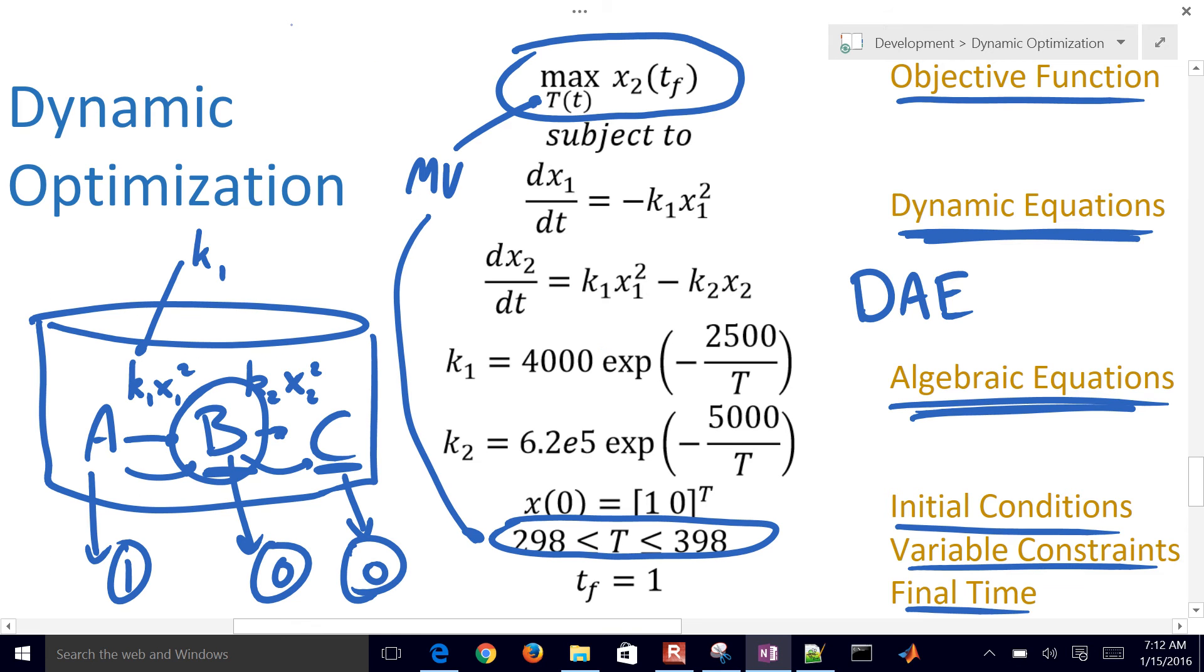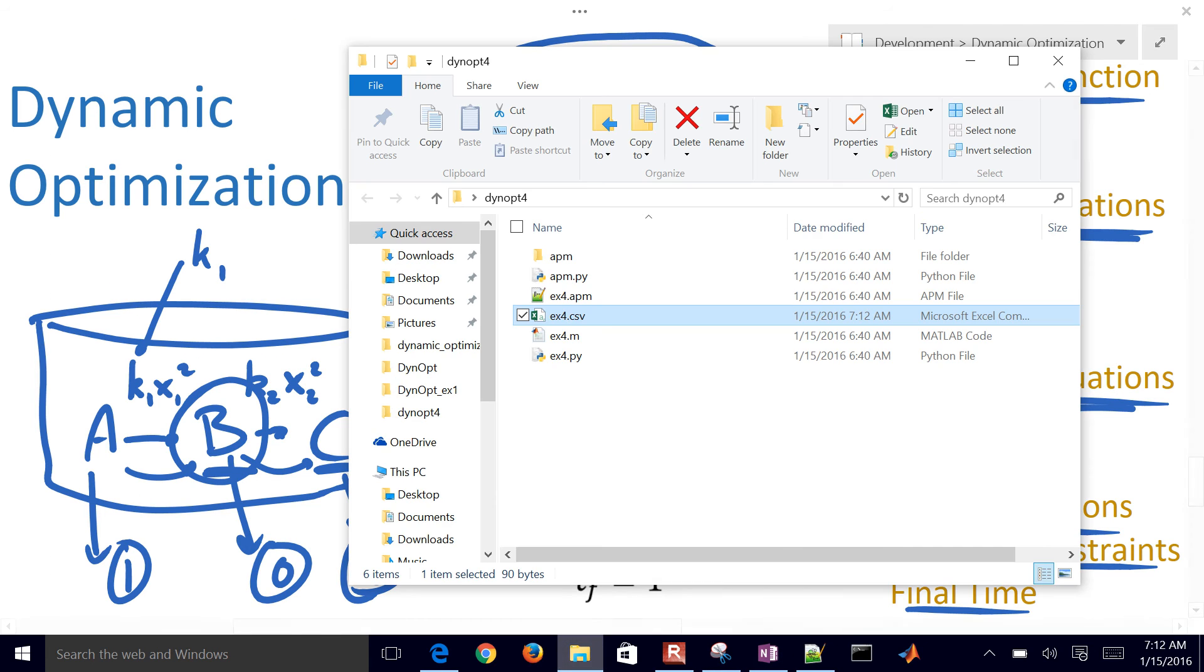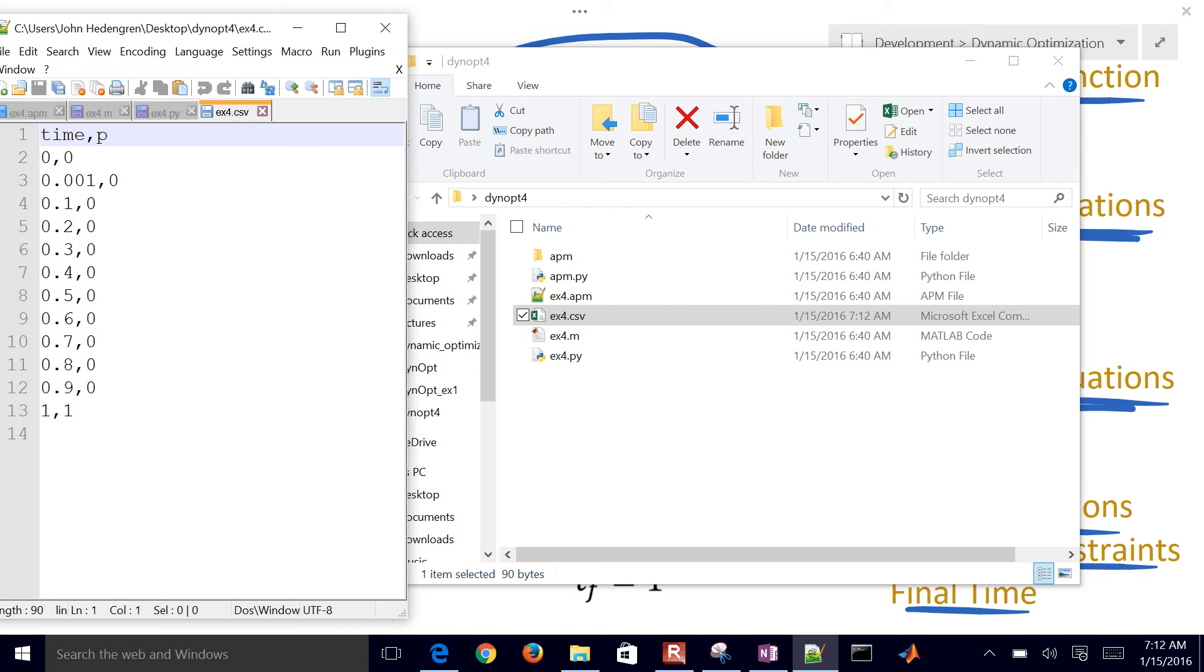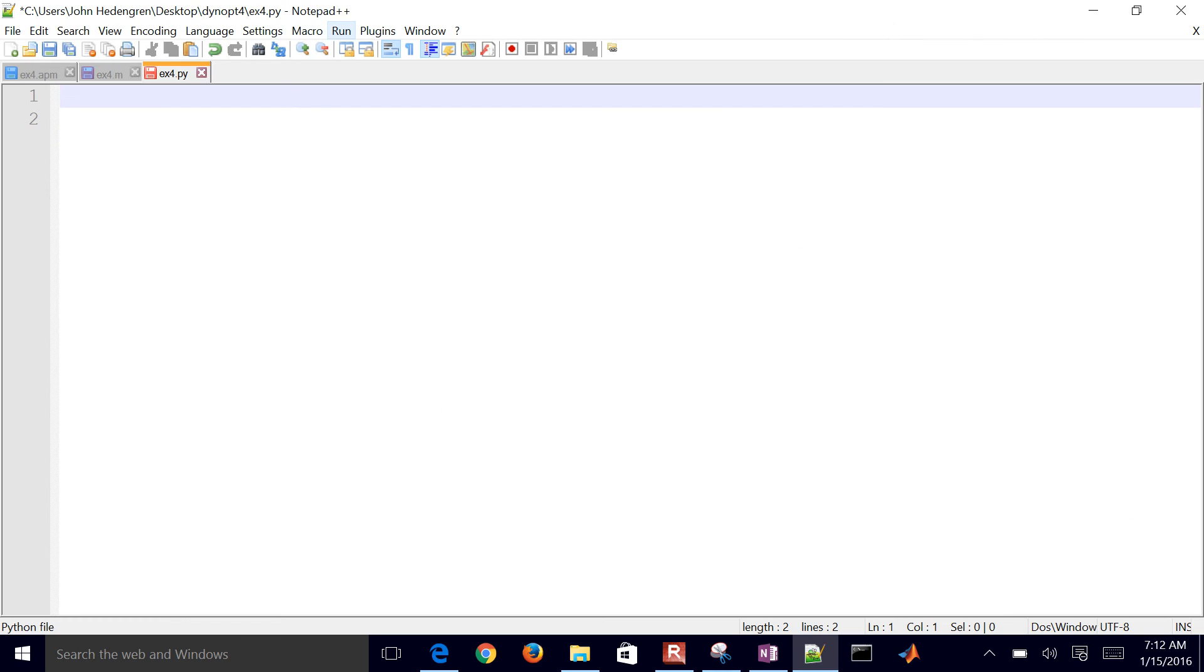All right, so let's go to my folder, and I'm just going to open this data file up with Notepad. You can just see it's a text file, CSV file, separated by commas.